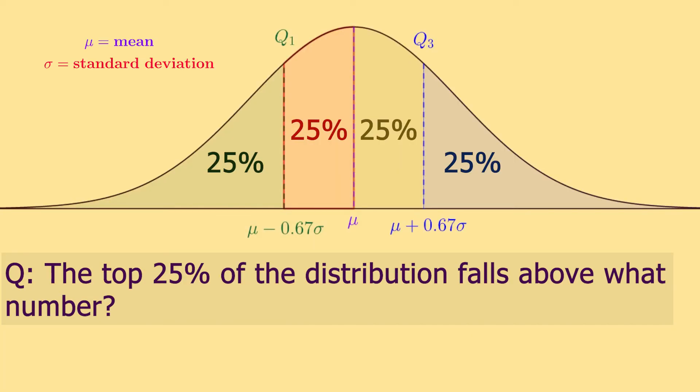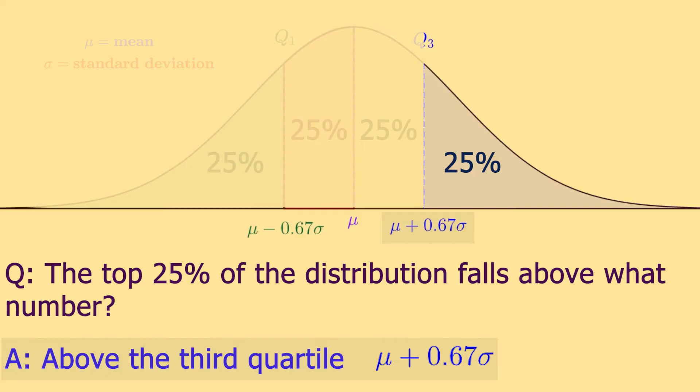If you have a question that asks about the top 25% of your distribution is above which number, well then you would use this number here, the third quartile, which is the mean plus 0.67 times the standard deviation. 25% of our distribution lives above this number.